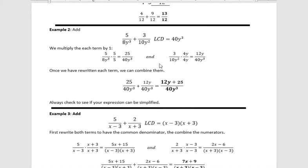Now that they both have 40y cubed in the denominator, we can put those together and keep the denominator the same. I could write that as 25 plus 12y or 12y plus 25. And I typically write the variable term first, because that's usually how we do it. We always want to check to see if we can simplify. Is there a common factor between 25, 40, and 12? And there is not one that goes into all three of those.